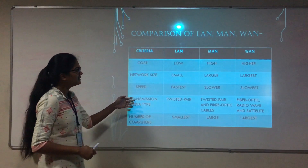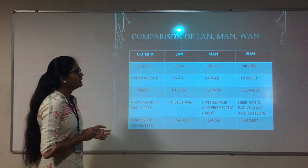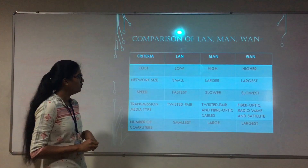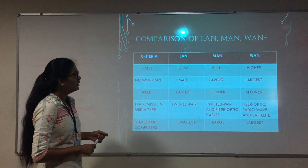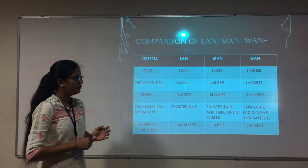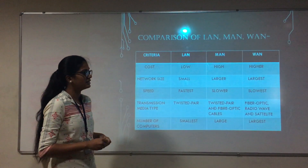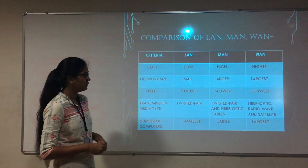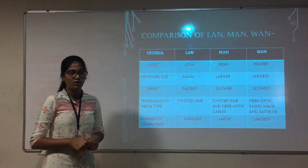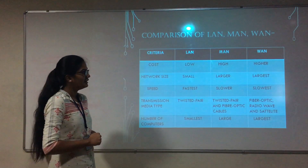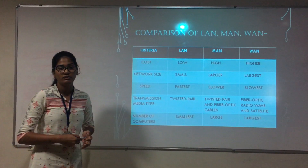The speed is faster in LAN because there are very few computers connected, but in case of MAN and WAN it is slower. The transmission media in LAN is twisted pair cable, in MAN it is twisted cable and also fiber optics, and in WAN it is fiber optics, radio waves and satellite. The number of computers that can be connected to a LAN is very small, but in MAN it is comparatively high, and in WAN we can connect any number of systems.